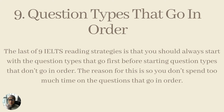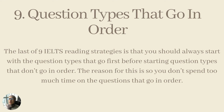The ninth tip is that you should always start with the question types that go in order before going to the question types that do not go in order. This will save you a lot of time, and then you can spend more time on question types that do not go in order to figure out the answer. If you'd like to see another video explaining my techniques for skimming and scanning and how to practice these, check out my other video linked below.